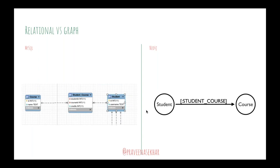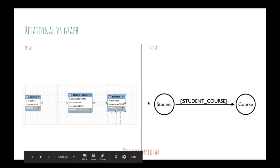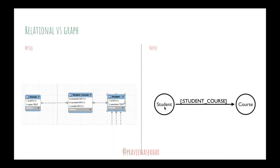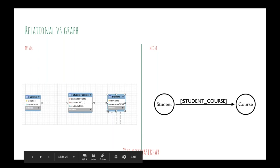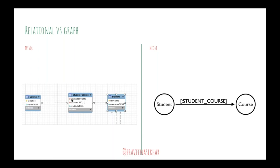Another classic case is a many-to-many relationship: many students and many courses, where students take courses. In Neo4j, you just link the student node to the course node directly — many students can link to the same course. In MySQL you'd have a join table with student ID and course ID as foreign keys, plus a credits column. In Neo4j, you can have credits as a property on the student-course relationship, achieving the same result.